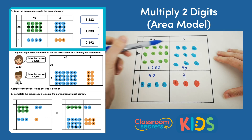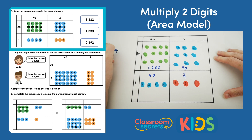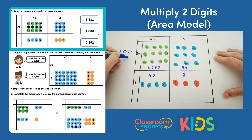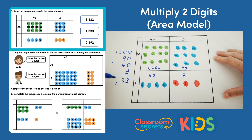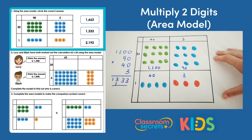What we can do now is add everything inside the grid together. That would be 3, then 9 add 4 makes 13, then 2 add 1 makes 3, and then 1 add nothing makes 1. So the answer to 43 times 31 is 1,333. That is one of the options on the sheet, so we can circle 1,333.